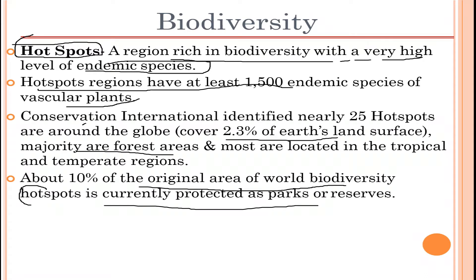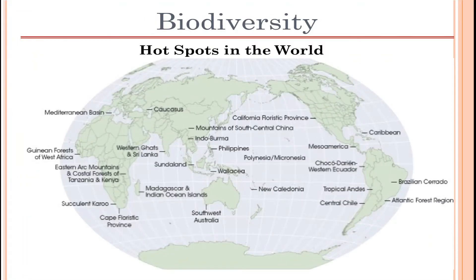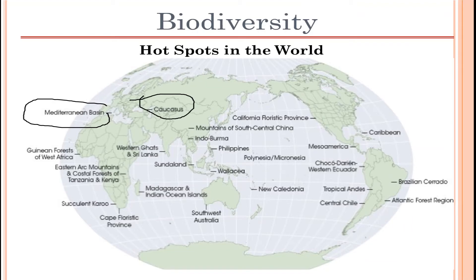Here is a world map where hotspots are marked. As you can see across different countries, there are hotspots such as in America, in the upper part, under Madagascar, in Australia — specifically southern and western Australia — the Caribbean islands, and many others. You can pause the video to take a closer look. There are lots of hotspots in the world where these organisms are present as a whole in a particular geographic region.